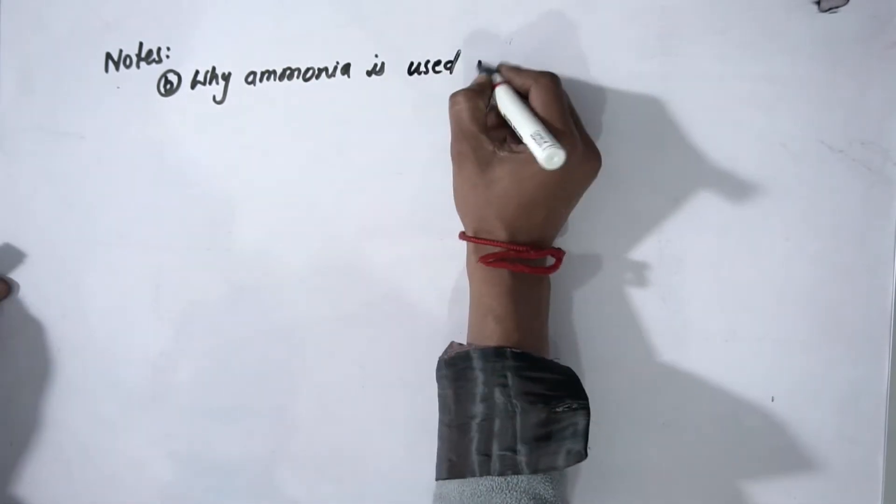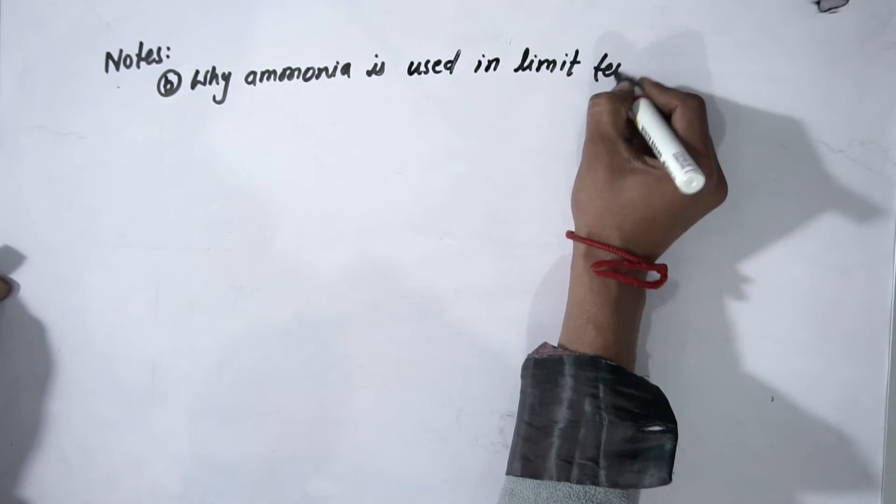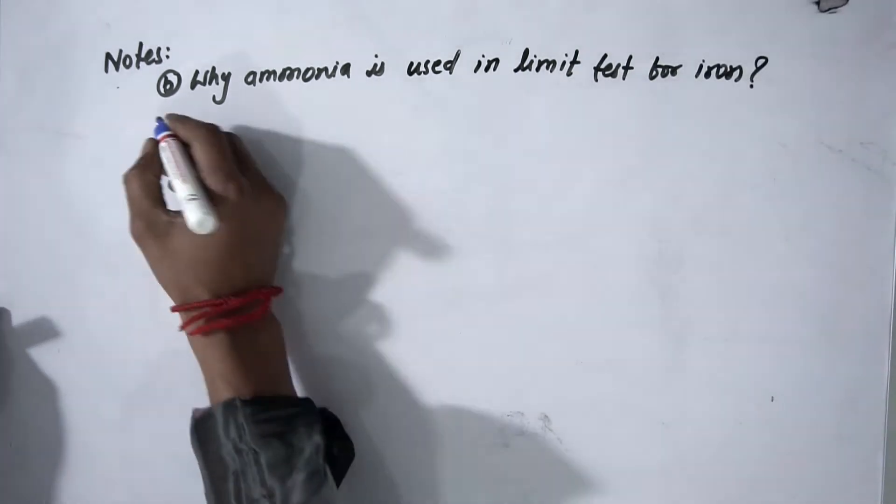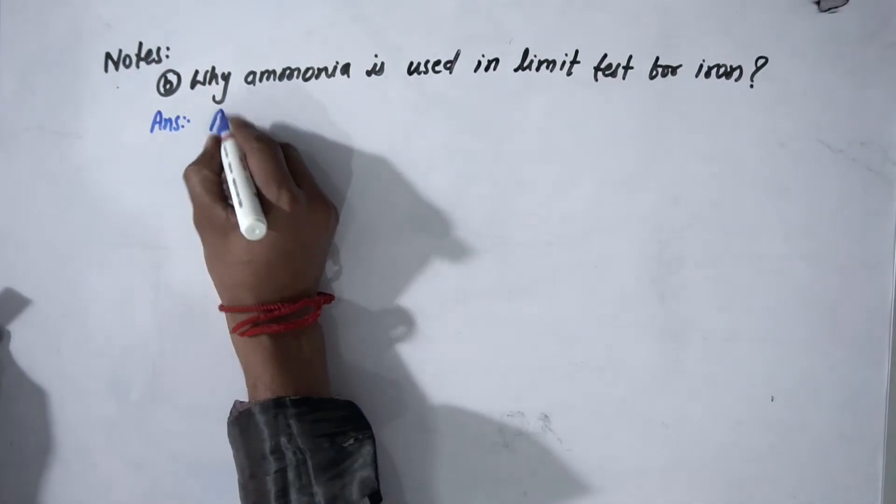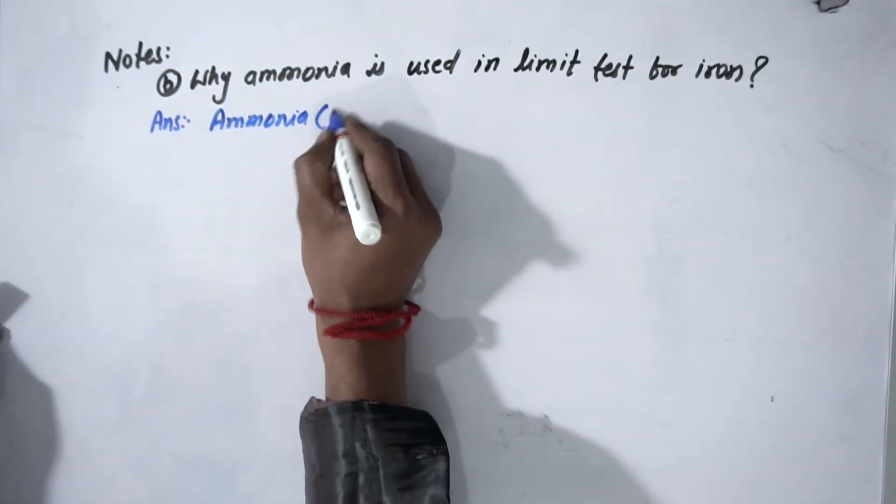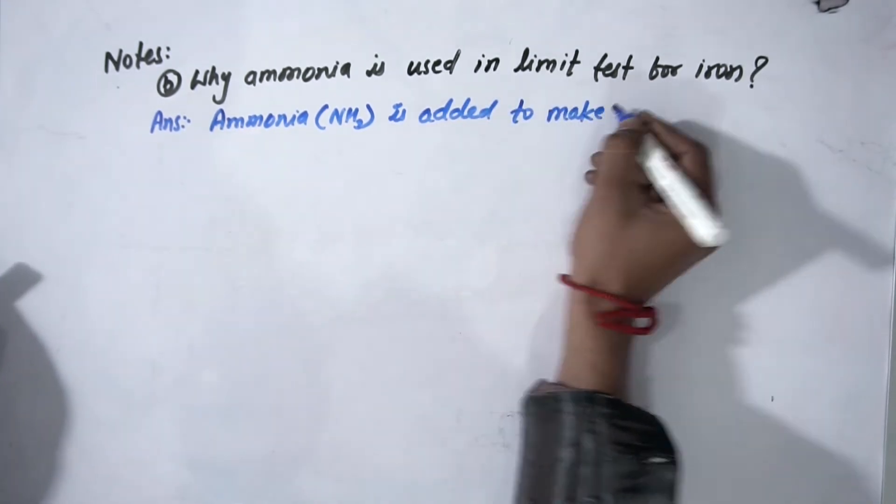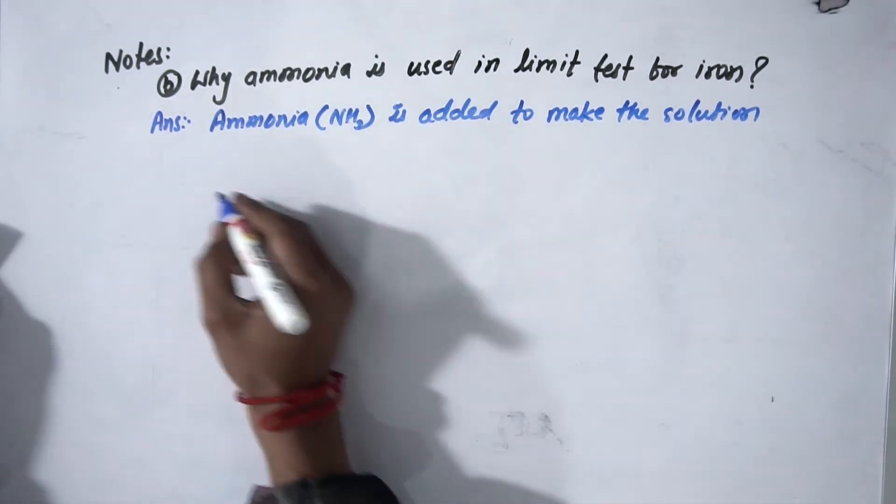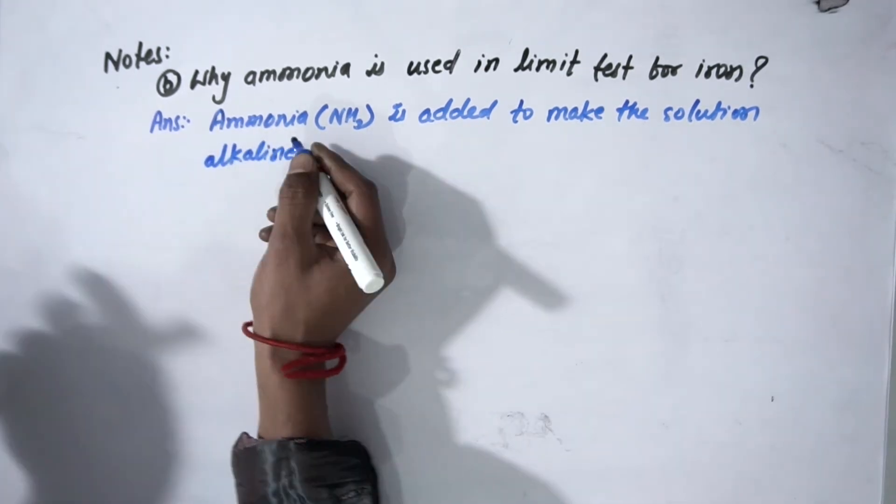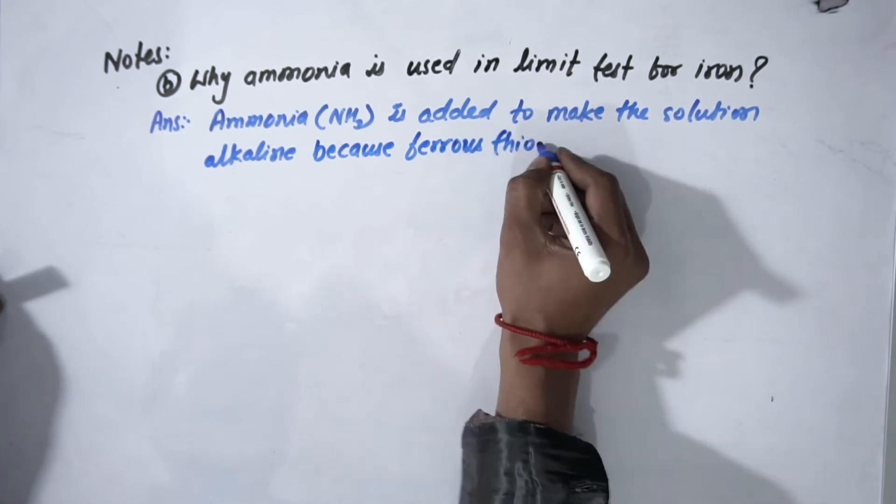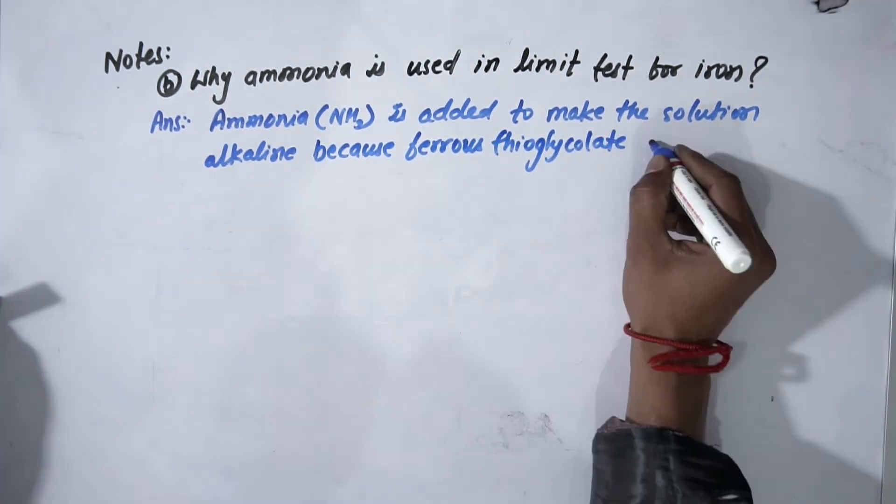So without wasting time, let's go to the question: why is ammonia used in the limit test for iron? The answer is that ammonia (NH3) is added to make the solution or media alkaline. Why? Because ferrous thioglycolate, which is produced by